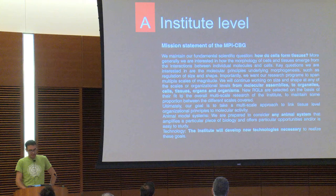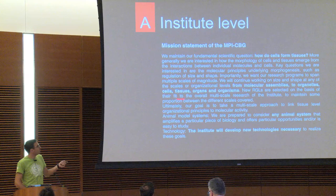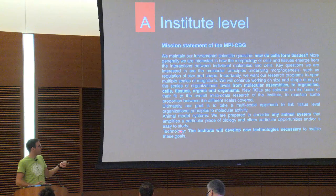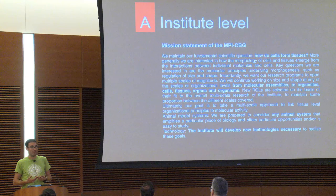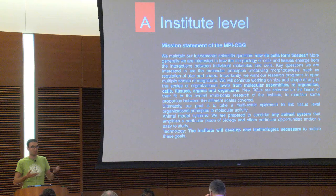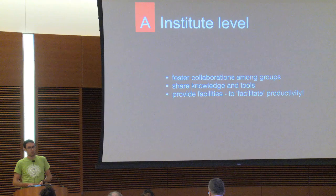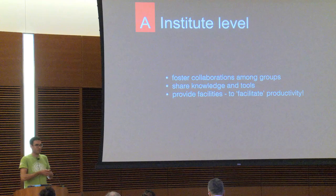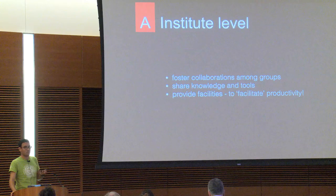At the institute level, the MPI CBG wants to understand how cells form tissues — gigantic research questions. They're willing to develop new technologies if necessary, including our microscopes and pipelines. They'd be very happy if those pipelines don't die with a paper but if parts can be reused. Software synergy matters at the institute level: you want to foster collaborations, share knowledge and tools, and provide facilities where people can learn how to reuse software built for similar projects in the past.